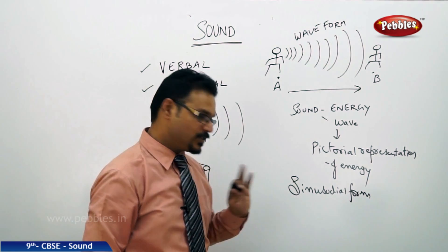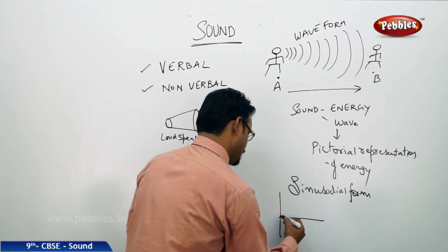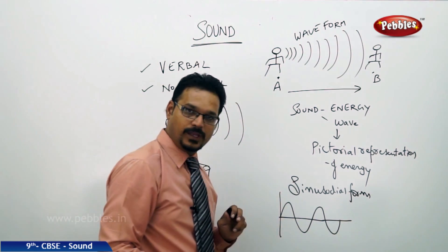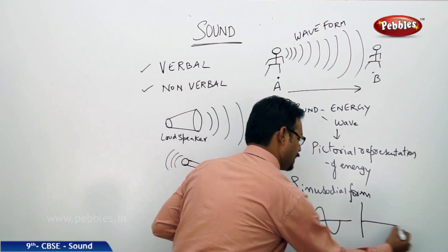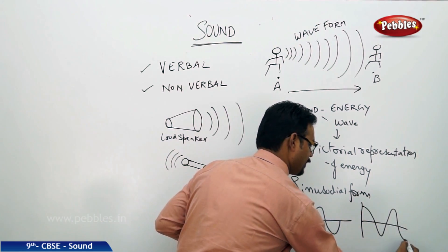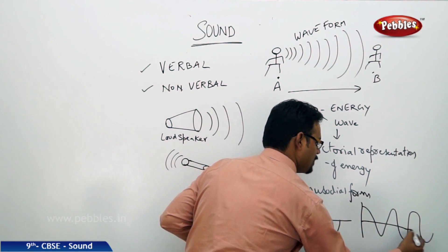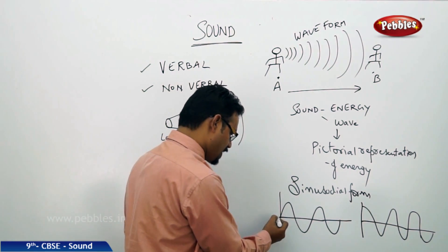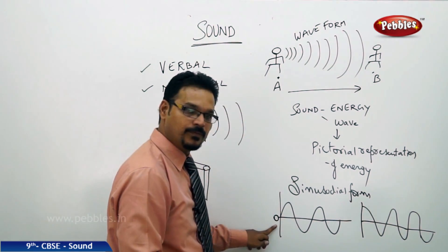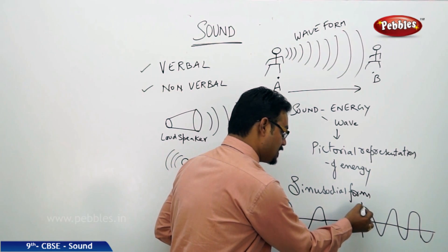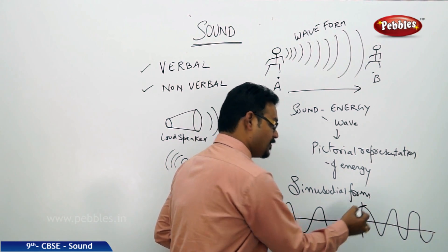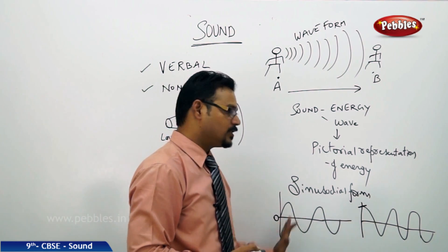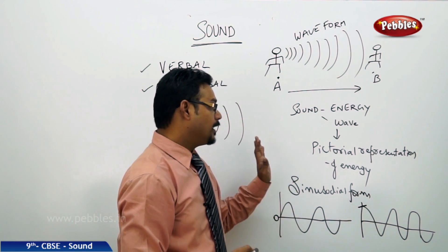Sinusoidal form means it is either this way or is in this way. If you see both ways look same but the starting is different. Here the wave started the origin. Here the wave doesn't start at the origin, started some fixed value. So either way you can show the pictorial representation of energy which is you can show the sound.